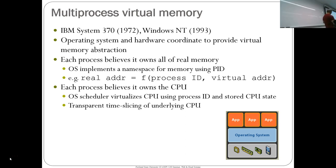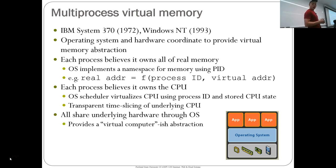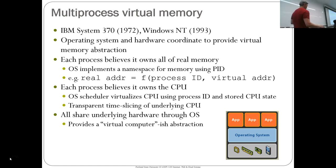Time slicing the CPU is one part; the memory namespace is another. Multi-process virtual memory lets you switch from process to process by switching the memory mapping — transparent time slicing of the underlying CPU via the scheduler. All processes share the underlying hardware through the OS. This is what I call a virtual computer abstraction — well, a virtual computer-ish abstraction, because there is some sharing going on.